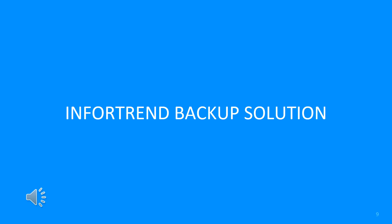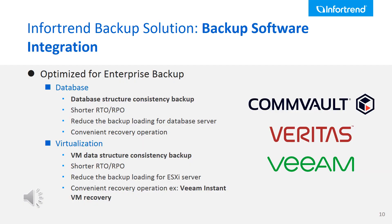In this chapter, we will introduce the InfoTrain storage solution for backup applications, including third-party software integration, InfoTrain storage data services, and the type of RPO and RTO tier this solution can support. The first backup solution is backup software integration with worldwide leading backup software vendors: Veeam, Veritas, and CommVault. These are the experts in enterprise backup solutions, especially for database and virtualization applications. This backup software has four major advantages.